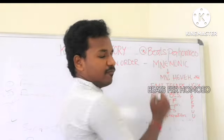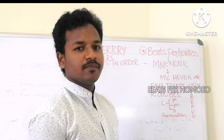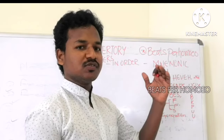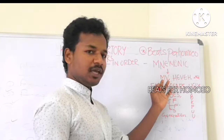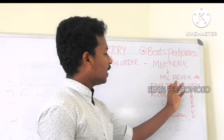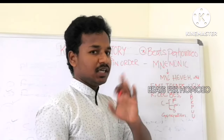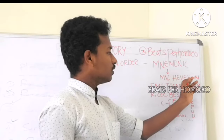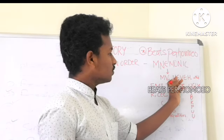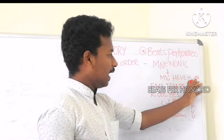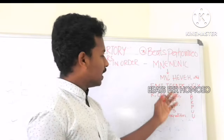Just remember: the 10 chapters in the repertory start with the Mind and end with Generalities. So it starts with M and V, then H, E, V, E, H, H, E, V, E, H — from the starting to the ending. It will come to similar, and only take the N, and then F, M, T, and the teaser.